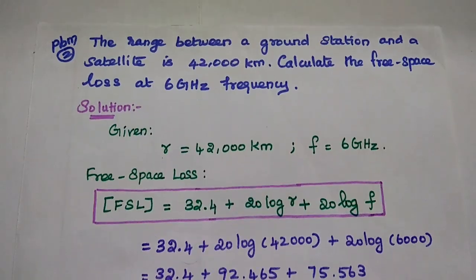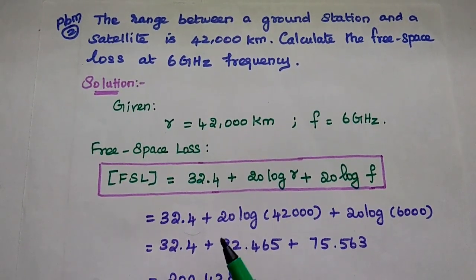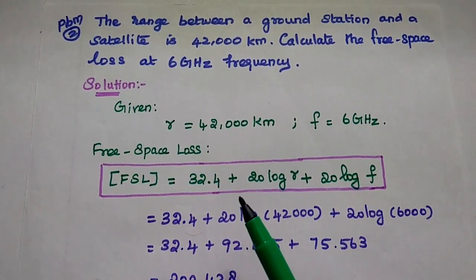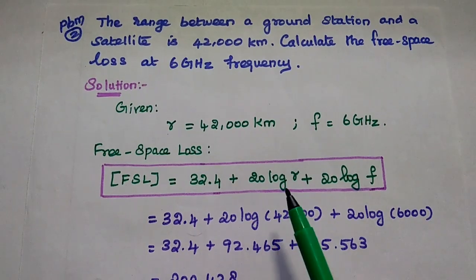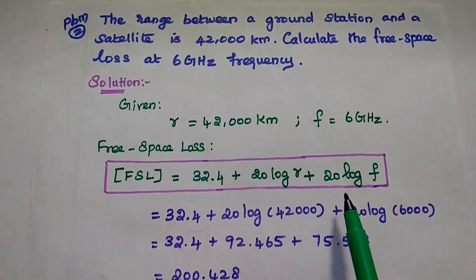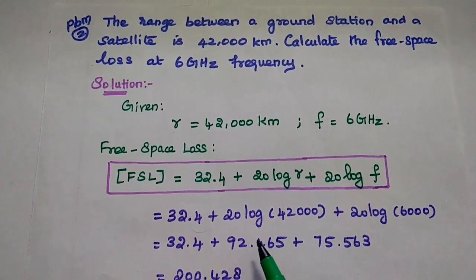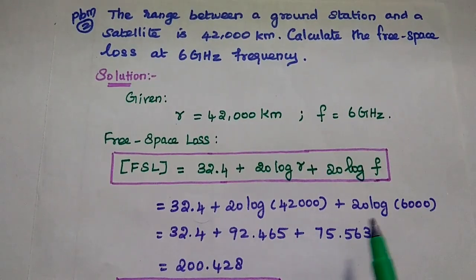The formula for this free space loss is FSL, that is equal to 32.4 plus 20 log R plus 20 log F. We have to simply substitute the values of R and F here.